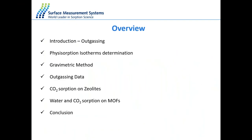This is a brief overview of the talk. We'll discuss in general terms what outgassing is and why it's important — the main reason being the collection of adsorption isotherms. Then we'll focus on the gravimetric method, which the surface measurement system uses. We have a DVS analyzer which provides adsorption data. We'll also show examples of outgassing data, and the effect of outgassing on carbon dioxide and water adsorption on zeolites and MOFs.